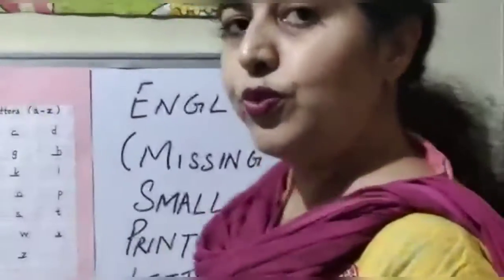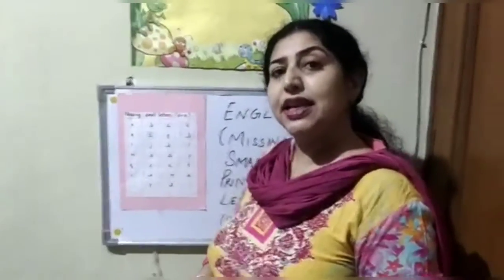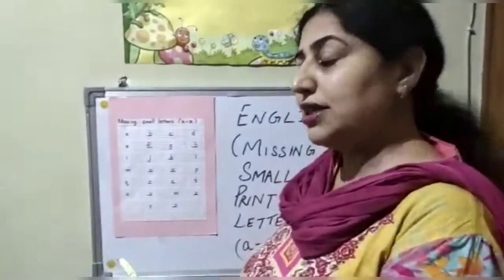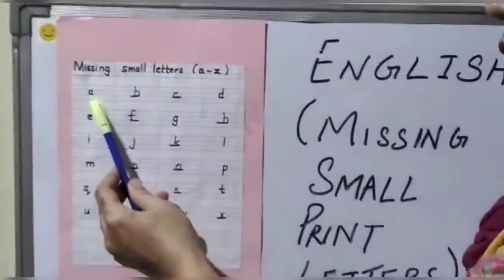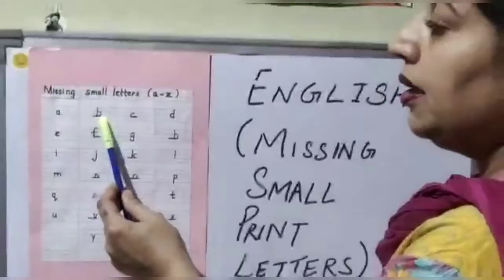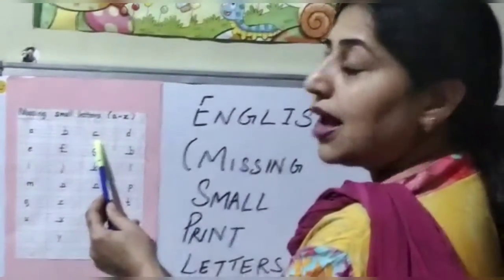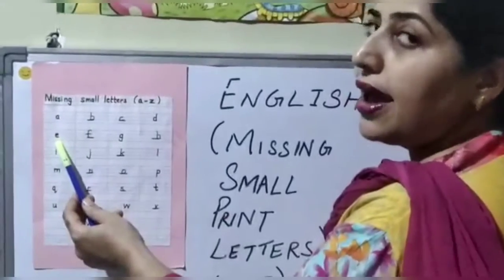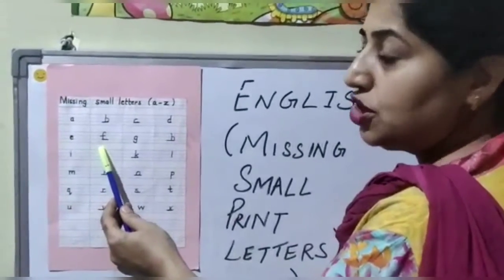Now we have done A to Z missing letters. We will just revise it once. A — Apple. B — Ball. C — Cat. D — Dog. E. F — Fish.